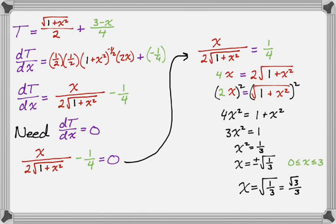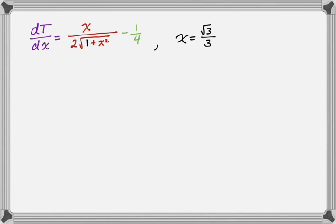The other two points, 0 and 3, are endpoints, and that's going to be relevant when we try to test intervals. We have this derivative, and we got x = √3/3 is what we're trying to test. So I'm going to make a sign chart for this, and on the sign chart, I'm going to put 0, √3/3, and 3. This is a sign chart for dT/dx.